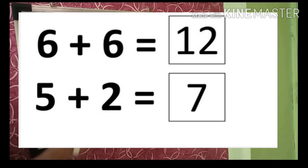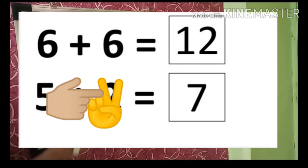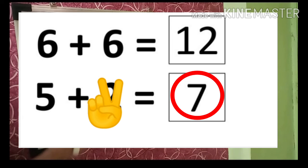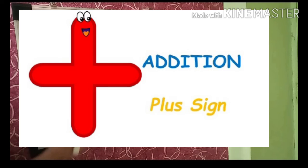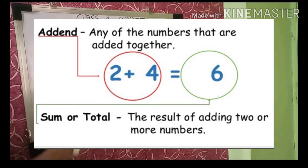Next is five plus two. We are counting five and two together — after five: six and seven, so we get seven. Five plus two is equal to seven. The sign we use for addition is the plus sign. For example, two plus four is equal to six. Here two and four are addends — any numbers we are adding together. The result of addition is the sum or total.